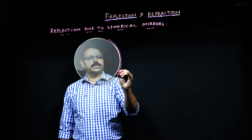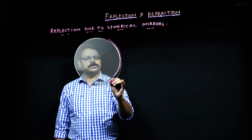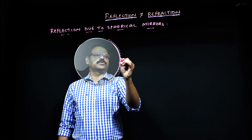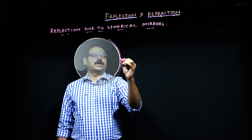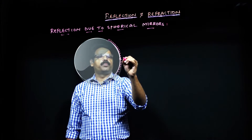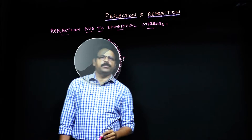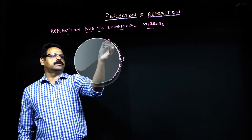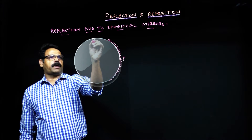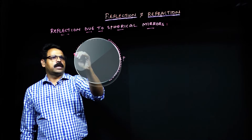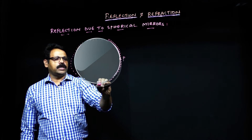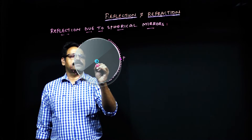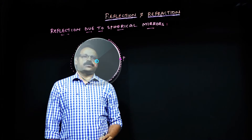The size of the mirror is from here to here. If you look at the center of this, that is going to be the pole — this is called the pole of the mirror. Now, if I extend the perpendicular line and imagine that it is part of a spherical body, then you will have a center, which is called the center of curvature.